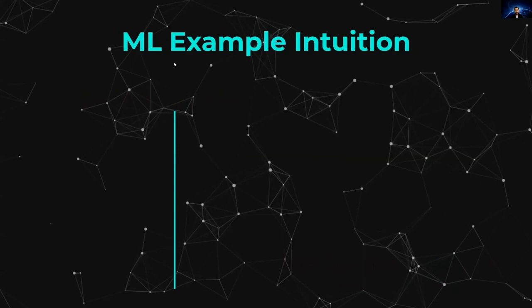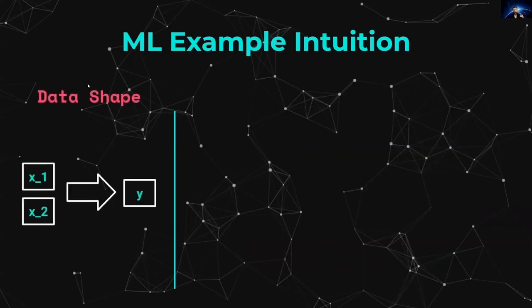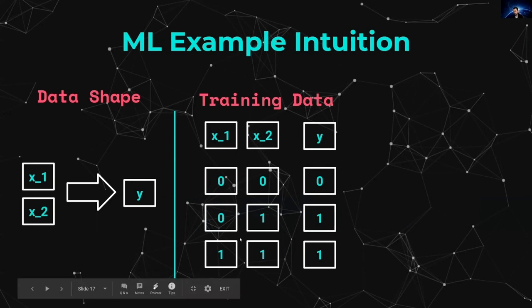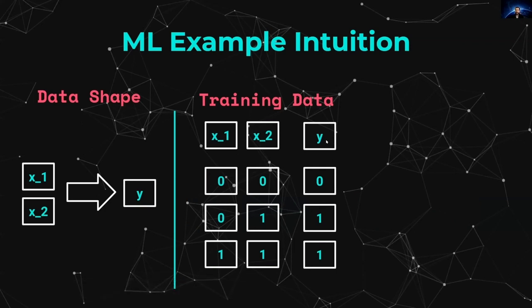In terms of intuition, we're going to have input data that looks like two numbers going through our machine learning model to produce a prediction. The training data looks like: when we see 0 and 0, we expect 0; when we see 0 and 1, we expect 1; when we see 1 and 1, we expect 1 — and so on. This is extremely simple, just to make the intuition clear rather than focus on the machine learning itself.